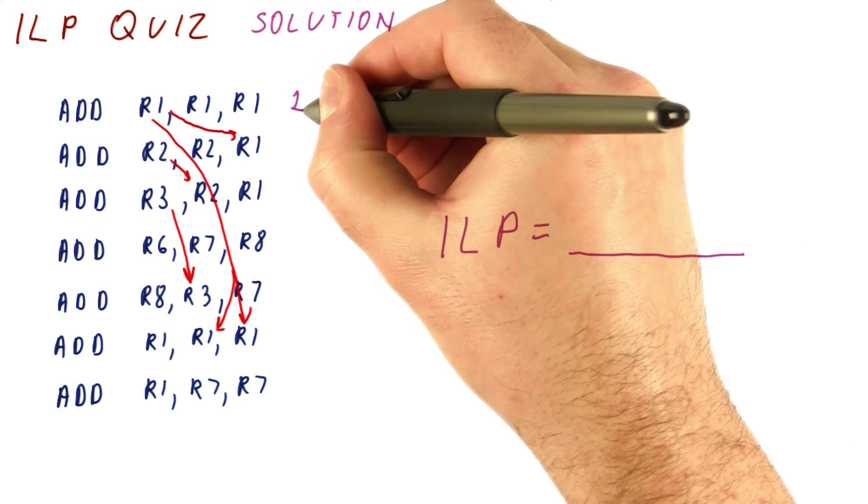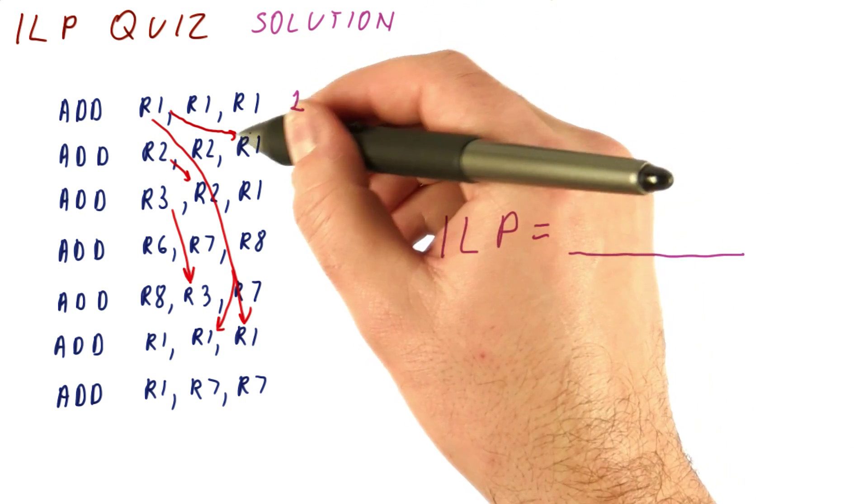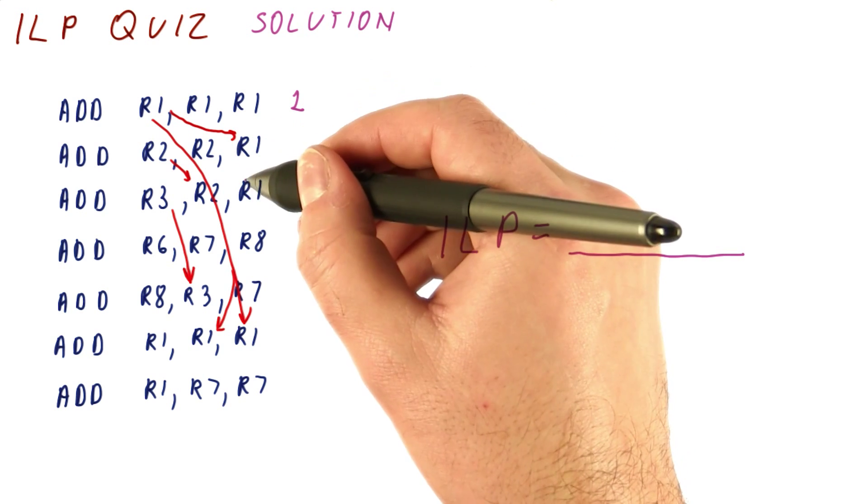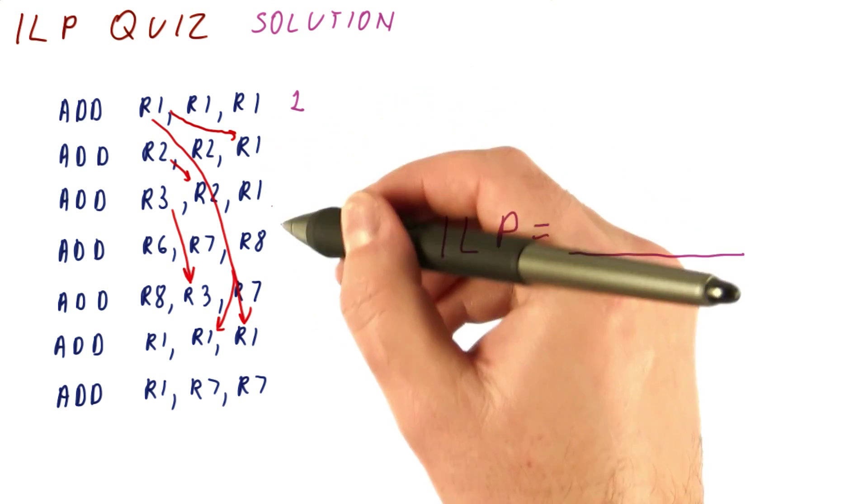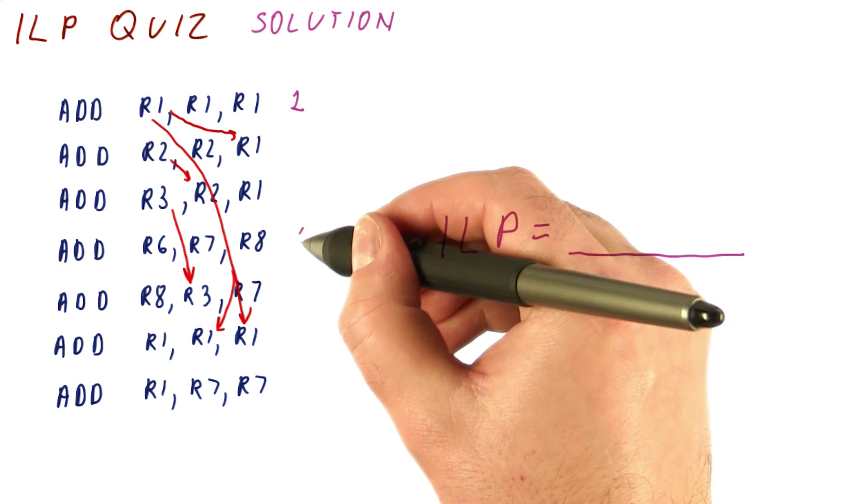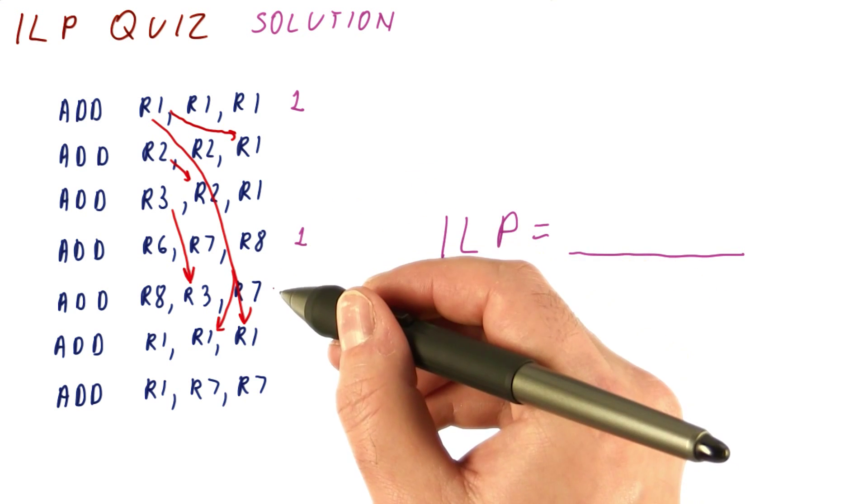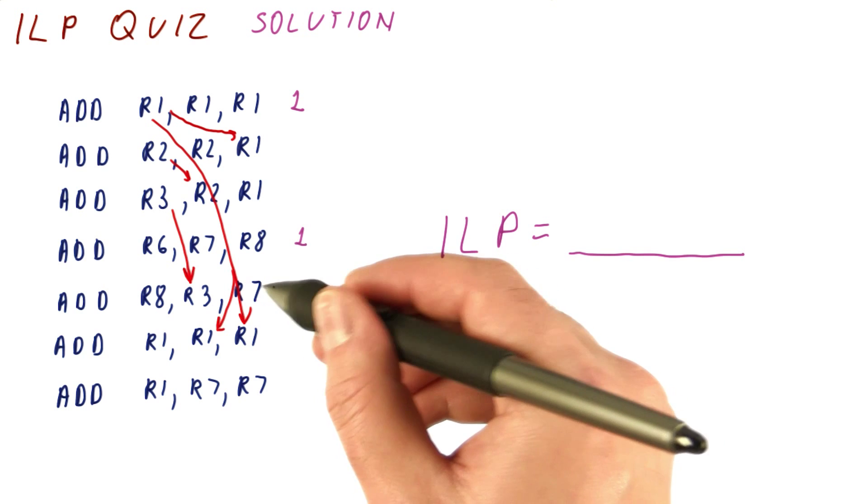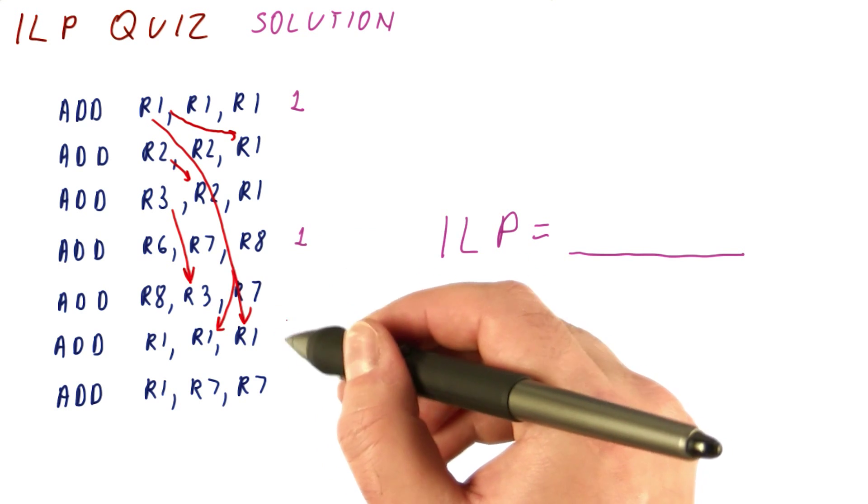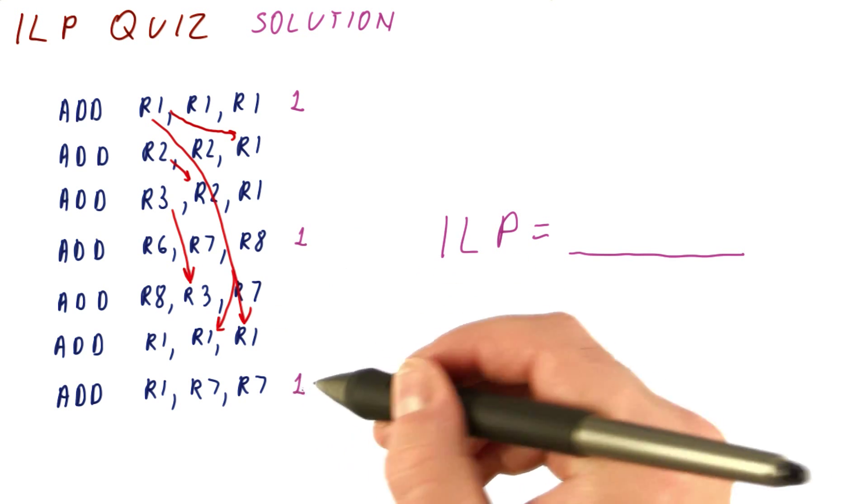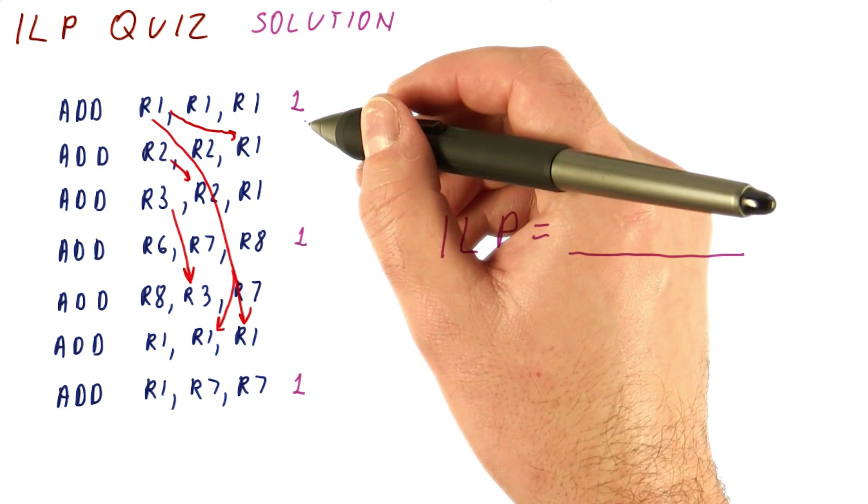In the first cycle, we can execute this one. We cannot execute this one because it depends on that. We cannot execute this one because it has to wait for the second instruction. We can execute this one, it doesn't depend on anything. We cannot execute this one yet because it has a dependence, this one also, but this one can execute. So in the first cycle, we managed to do three instructions.